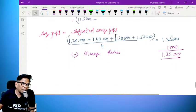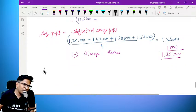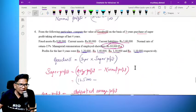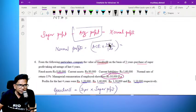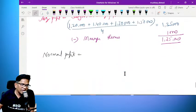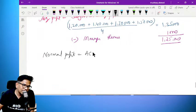Normal profit formula: normal profit is equal to average capital employed into NRR divided by 100.